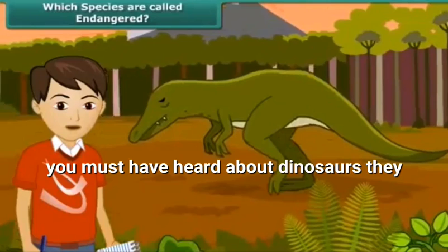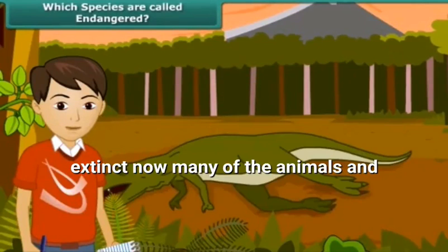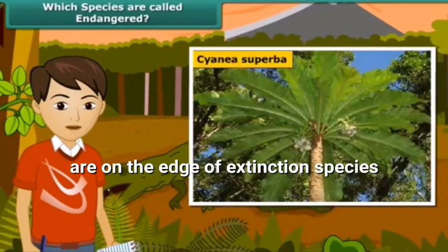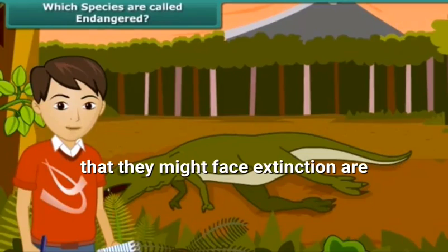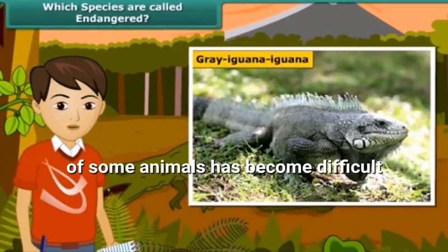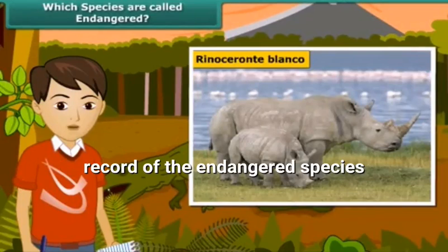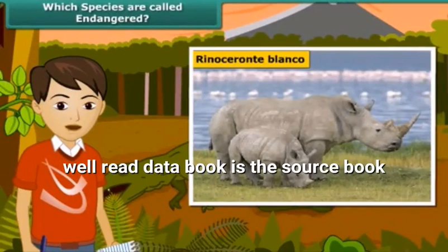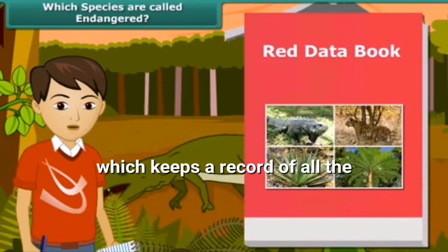You must have heard about dinosaurs. They existed millions of years ago but are extinct. Now, many of the animals and plants have become extinct, whereas some are on the verge of extinction. Species whose numbers are diminishing to a level that they might face extinction are known as the endangered species. Survival of the animals has become difficult because of the disturbances in their natural habitat. Records of endangered species are found in a book called the Red Data Book, which is a source book giving a record of all the endangered animals and plants.